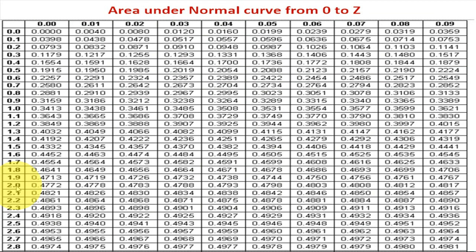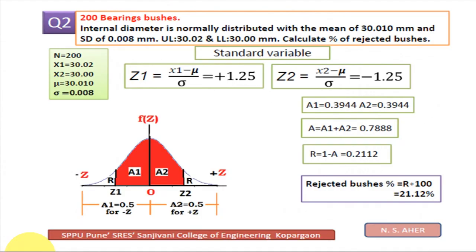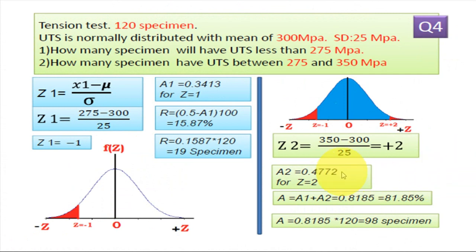So for 2, digit is 0, next digit is 0, 2.0, so we take 0, 2.0, area is 0.4772. So this much is the area from 0 to z equal to 2.